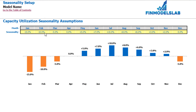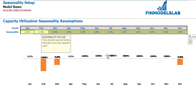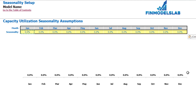A minus 10% means that if you have 50% average capacity utilization across the year, you multiply 50% by 0.9 and get 45% capacity utilization for February. Conversely, if July has plus 10%, you multiply 50% by 1.1 to get 55% for July. If you don't need any seasonality, you can put 0 across all months and it will be flat throughout the year.